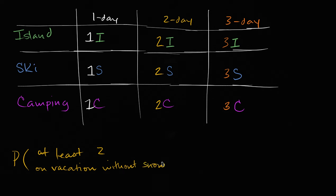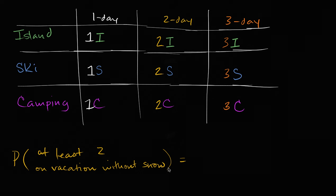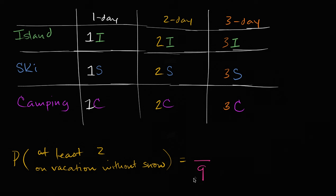You're going to randomly pick one of these nine outcomes. What's the probability that it's going to give you a vacation with at least two days without snow? Well, let's just think about it. We know the sample space, and we know each of the outcomes are equally likely. There are nine equal outcomes.